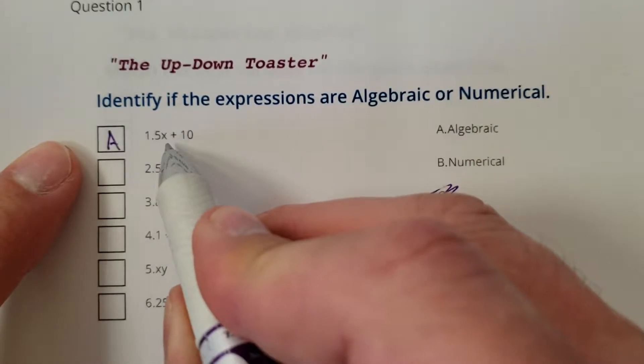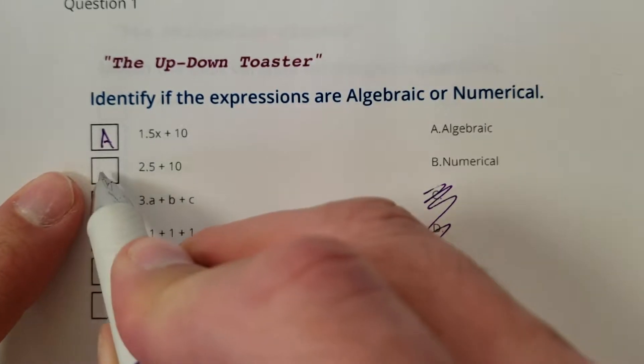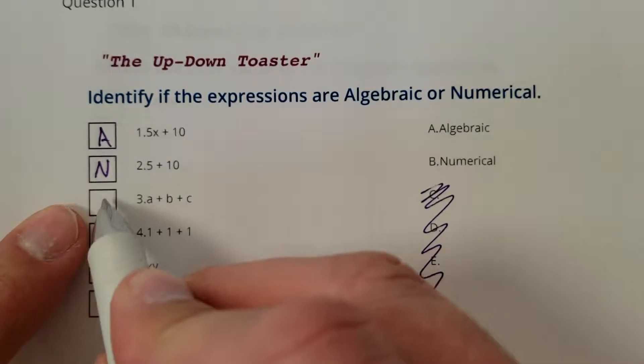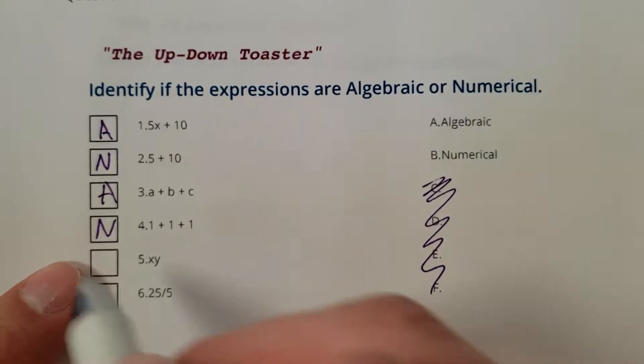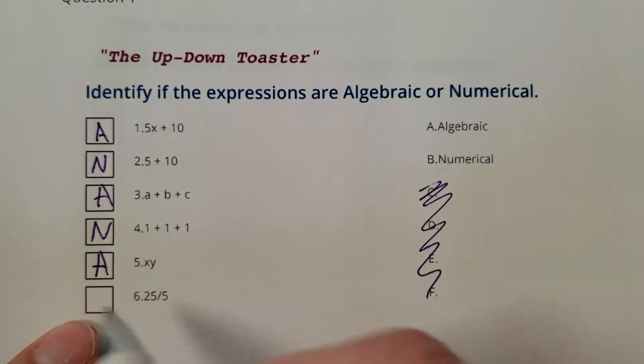You are algebraic because there's an X in there. You are just numerical. You are definitely algebraic. You're all variables. You are numerical, you are algebraic, and you are numerical.